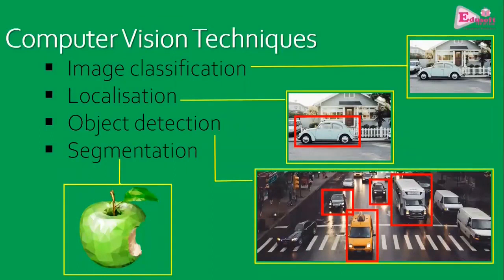There are basically four techniques in computer vision. The first is image classification — the computer should be able to tell what a particular image is about, whether it is an aeroplane, a car, a dog, a cat, a fruit, or a tree. The second is localization — identifying and locating an object within the image in terms of pixel coordinates.